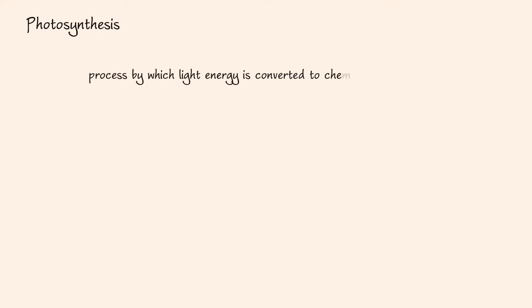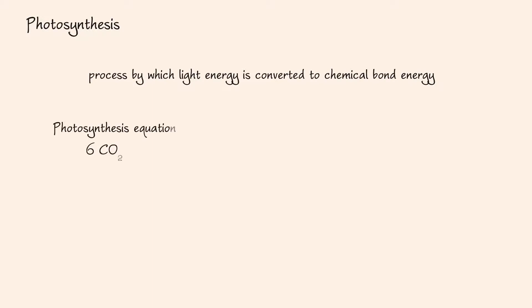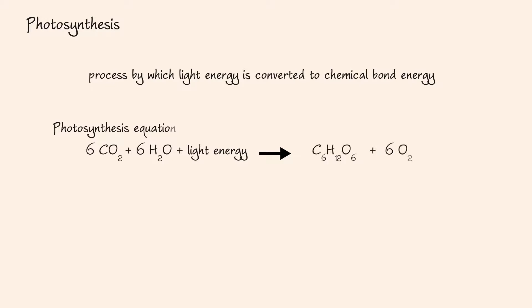Photosynthesis is a process by which light energy is converted to chemical bond energy. This process occurs in chloroplasts in plant cells. The overall equation for photosynthesis is: 6 carbon dioxide molecules plus 6 water molecules plus light energy is converted to 1 glucose molecule plus 6 oxygen molecules. The light energy is stored in the high energy chemical bonds of the glucose molecule.